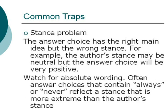Another common type of trap is a stance problem. In this type of answer trap, the answer choice has the main idea but does not reflect the author's stance. For example, the author's stance may be neutral on the topic, but the answer choice will be very positive, and that reflects a stance that the author does not hold, so it makes the answer choice incorrect. This type of answer trap often has absolute wording. When you see answer choices that contain 'always' or 'never,' they usually reflect a stance that is more extreme than the author's actual stance.